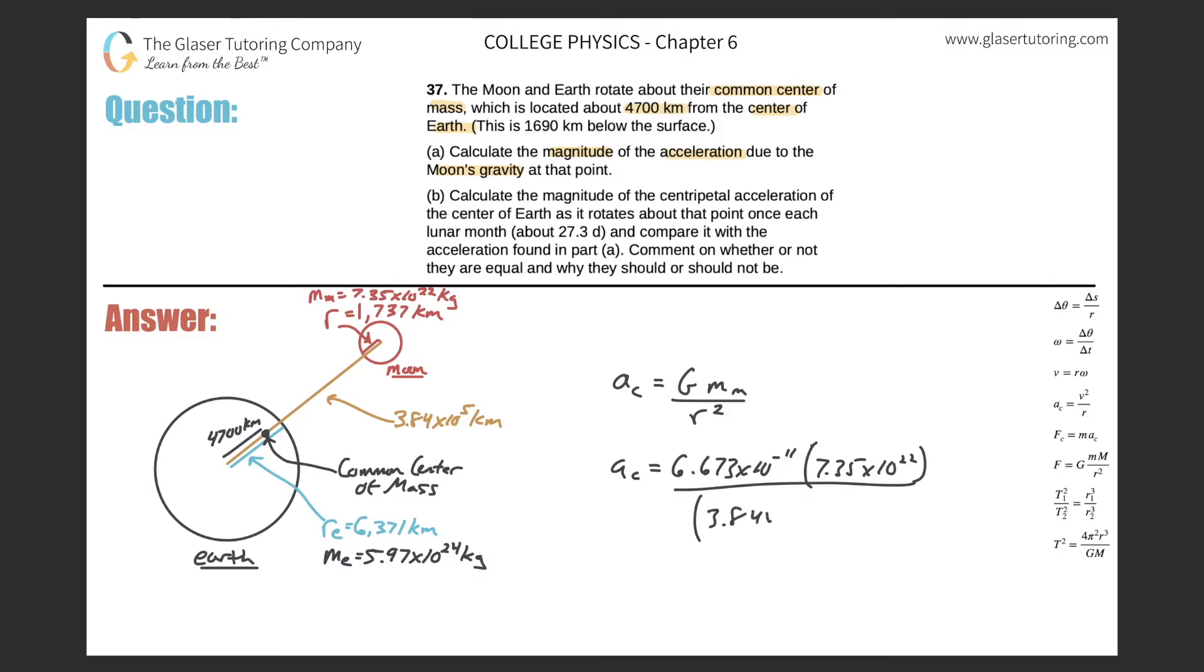Simply multiply them by 1000 or add three to the exponent if it's in scientific notation. So we'll do those very quickly here. 3.84 times 10 to the eighth minus 4,700,000, and that whole thing will be squared. That's all we got to do. Just plug it in now. So 6.673 times 10 to the minus 11 times 7.35 times 10 to the 22nd, divided by 3.84 times 10 to the eighth minus 4,700,000 squared.